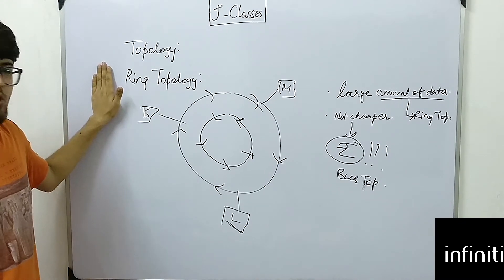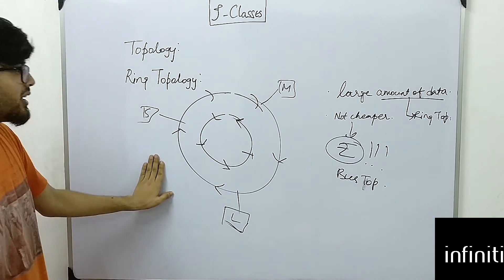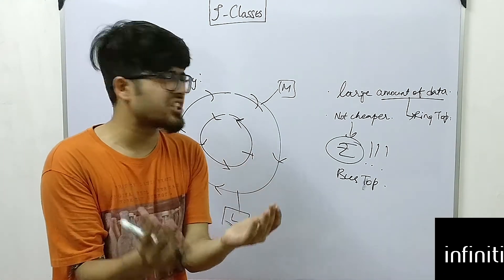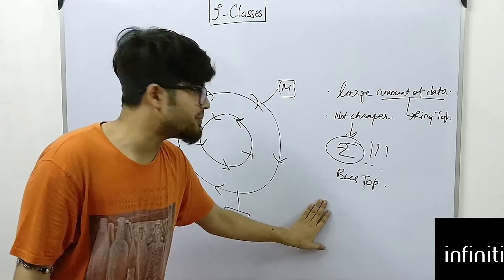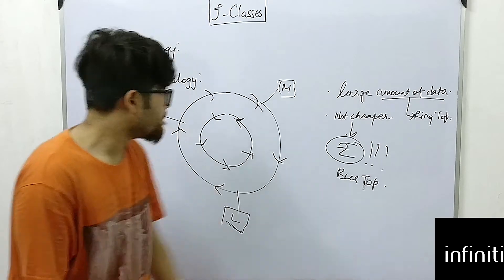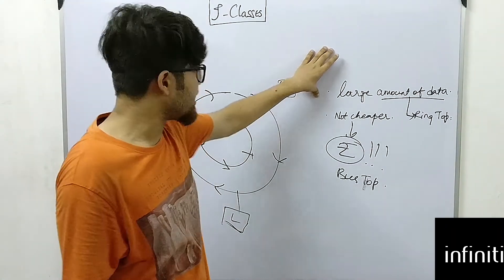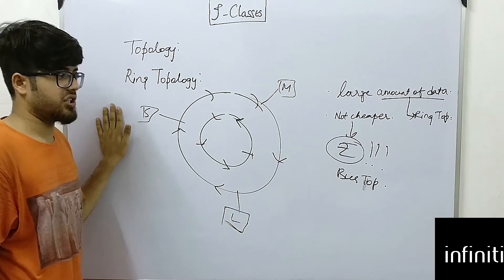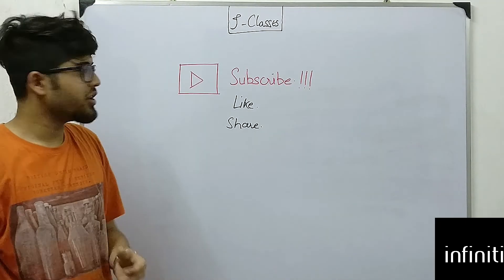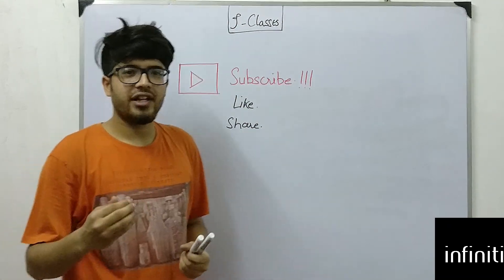Ring topology is much better and safer than bus topology, especially with double ring, which is much safer still. Due to its complexity and more resources required, it is not as cheap as bus topology. In summary: if money is your concern, use bus topology; if you need to handle large amounts of data, use ring topology. Thanks for watching — like, subscribe, share, and comment your queries below.